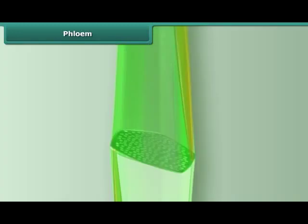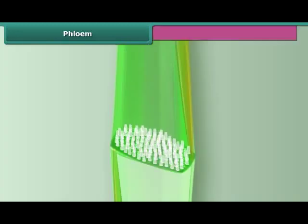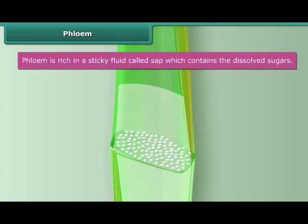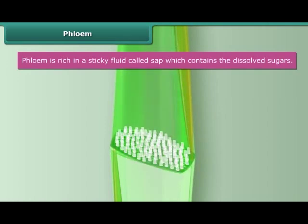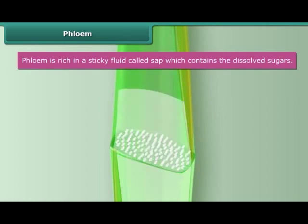Since phloem transports sugar, it is rich in a sticky fluid called sap, which contains the dissolved sugars.